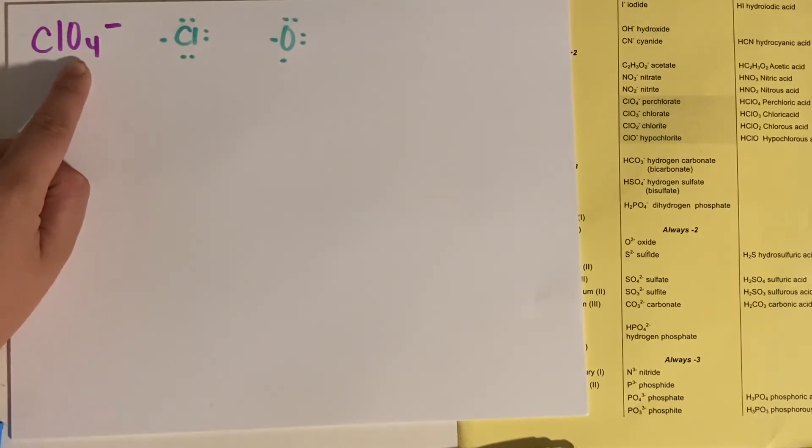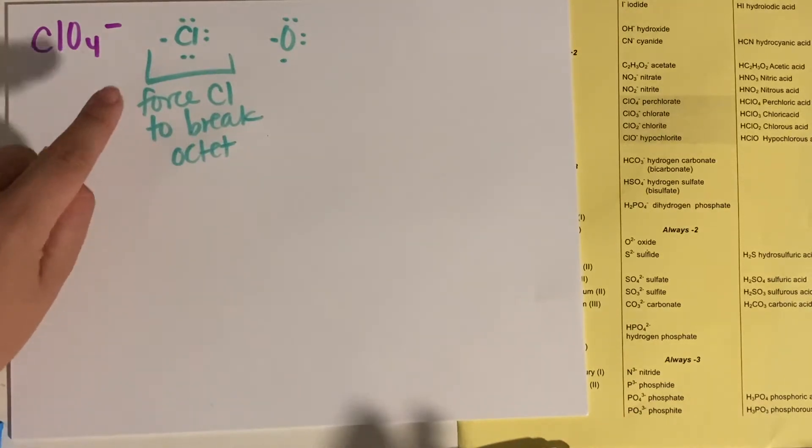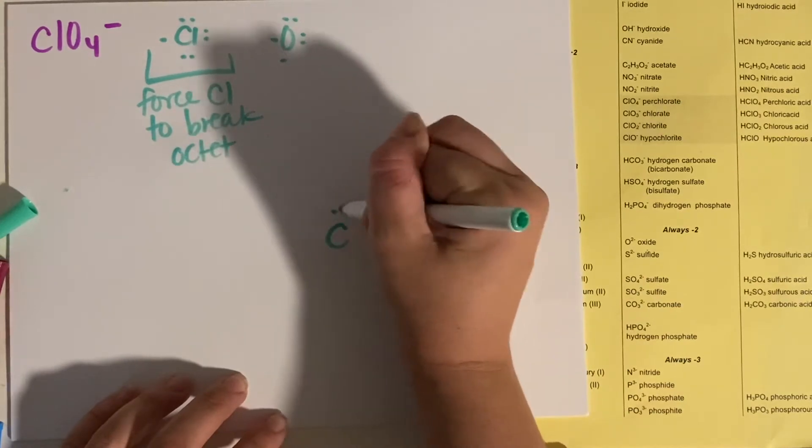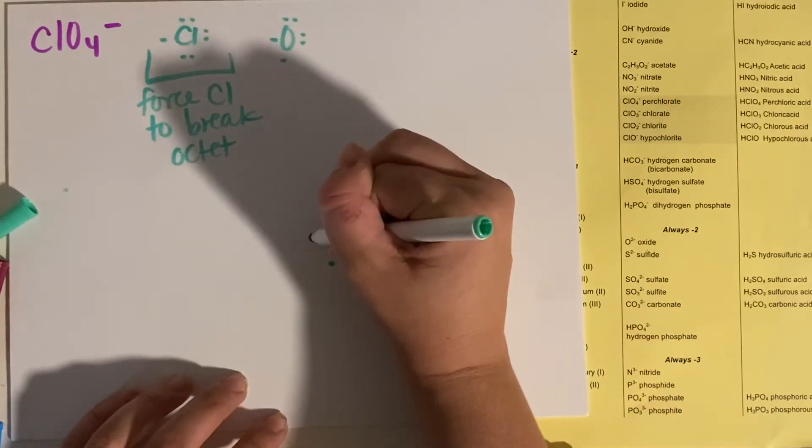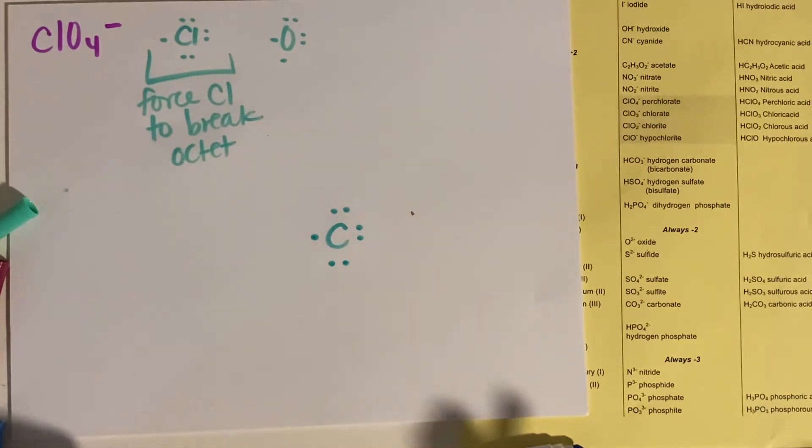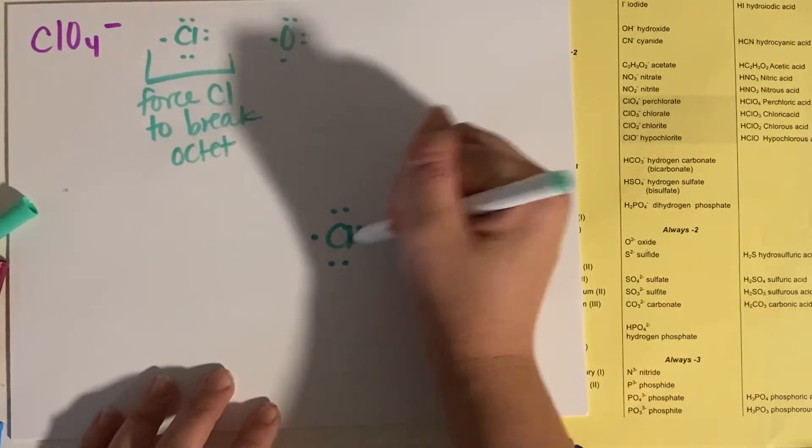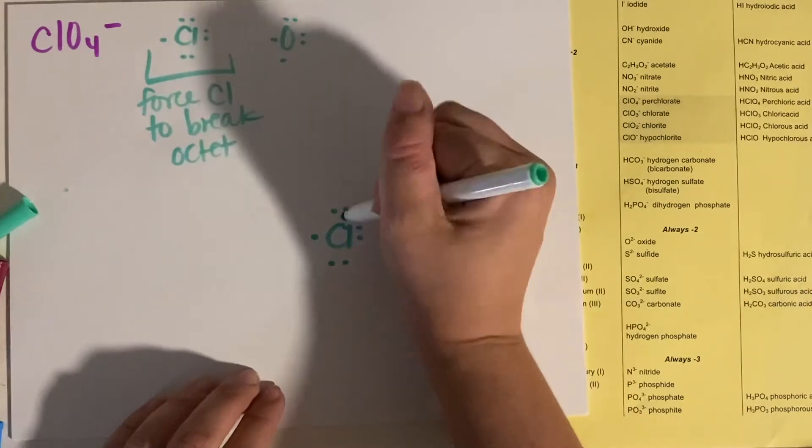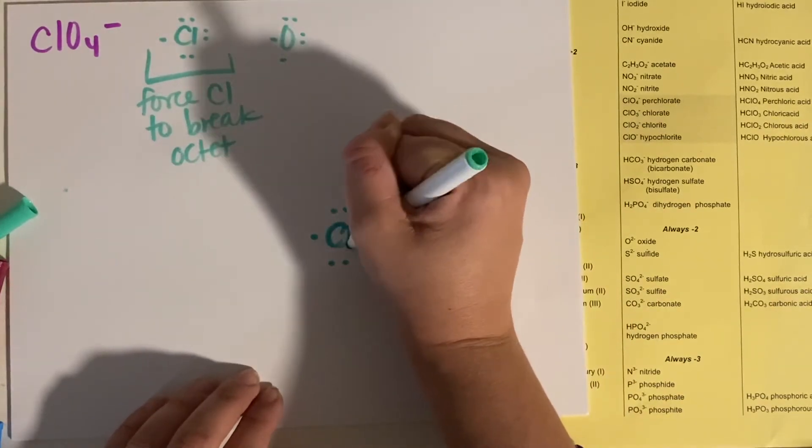In this case, you can force your chlorine to break the octet rule. So your chlorine is going to be your central atom and your oxygens are going to bond around it. So chlorine with one, two, three, four, five, six, seven electrons around it. And I need to attach four oxygens. I'm going to do that on each of the four sides. I'm going to make a tetrahedral. Always pay attention to what you're actually doing. This is Cl, chlorine.